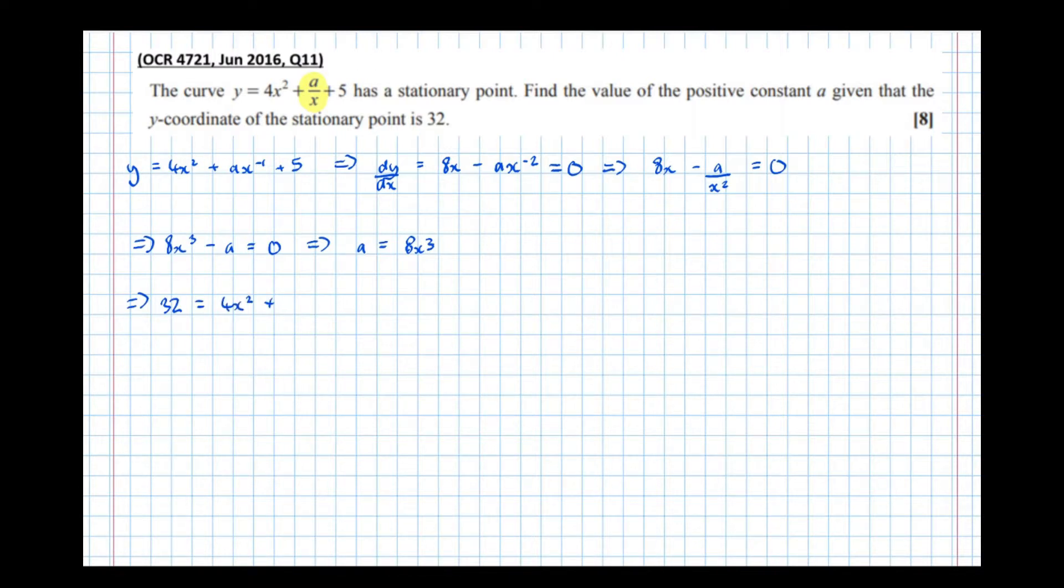And we know that a is 8x³, so 8x³/x + 5. Now if I times everything by x, I get 32x = 4x³ + 8x³ + 5x.